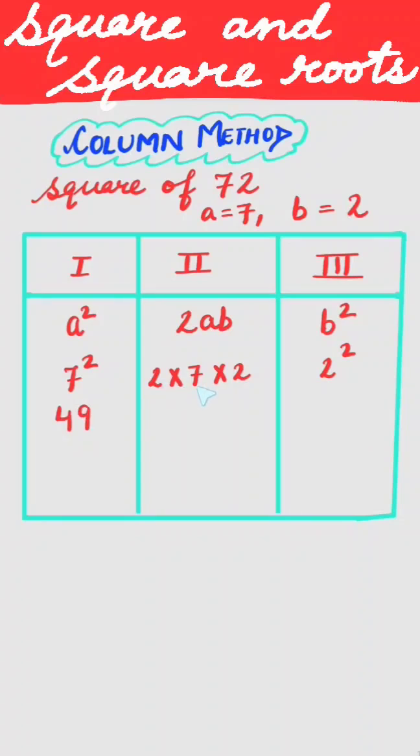7² is 49, 2 × 7 × 2 is 28, and 2² is 4. Now we will add the columns.